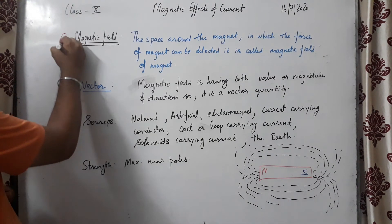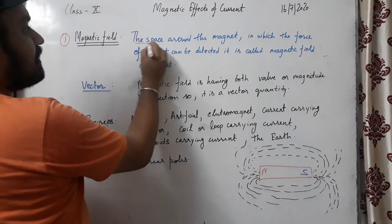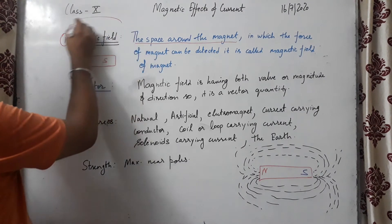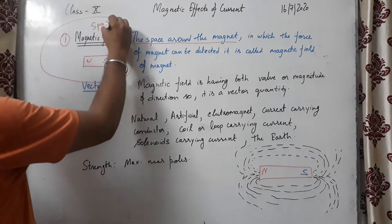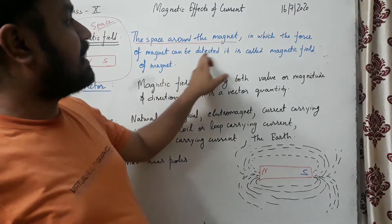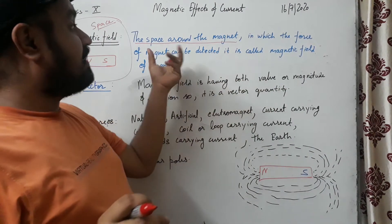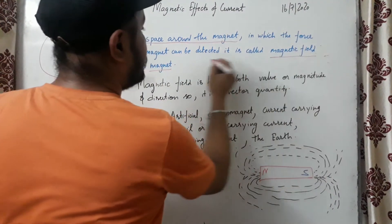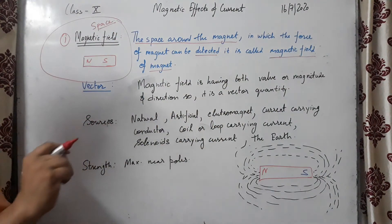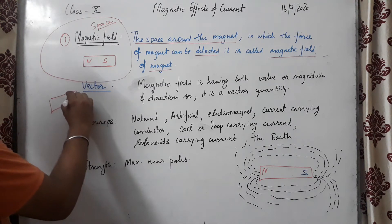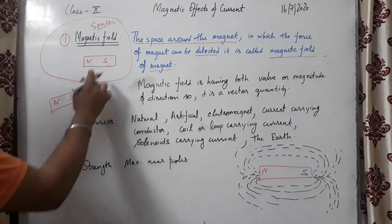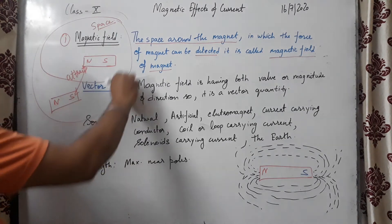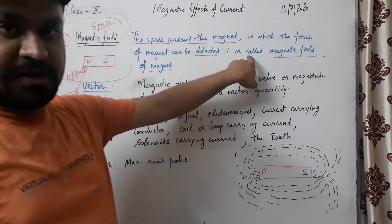The first topic is magnetic field. Magnetic field is basically a space around a magnet. Consider a magnet having a north and south pole — a hypothetical space around the magnet in which the force of the magnet can be detected is called the magnetic field of the magnet. For example, if we place another magnet nearby, south and north poles will attract each other. This space collectively is called the magnetic field.